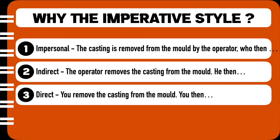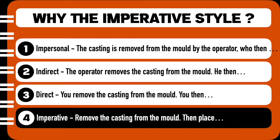The third form is the direct style: 'You remove the casting from the mould, you then...' This is much better than the first two styles. However, the pronoun 'you' keeps repeating in every sentence. Since I am the reader, I already know the instructions are referred to me, so we can do away with 'you' in every sentence. The fourth and best option is the imperative style, also known as the command style, where you simply tell people what to do — like 'stand up,' 'sit down,' 'close the door.' For example: 'Remove the casting from the mould, then place...' — I know directly what I have to do.